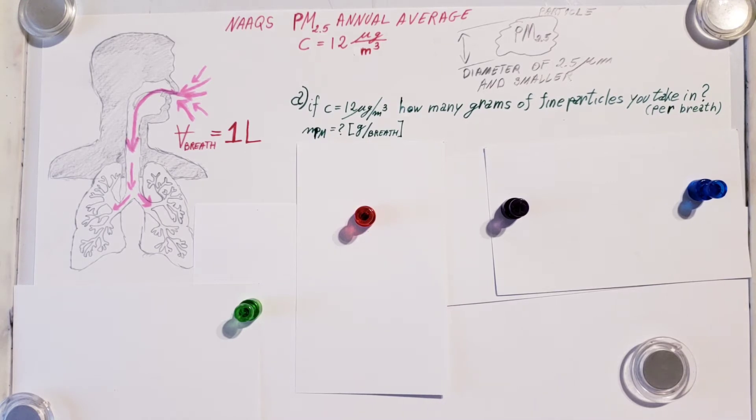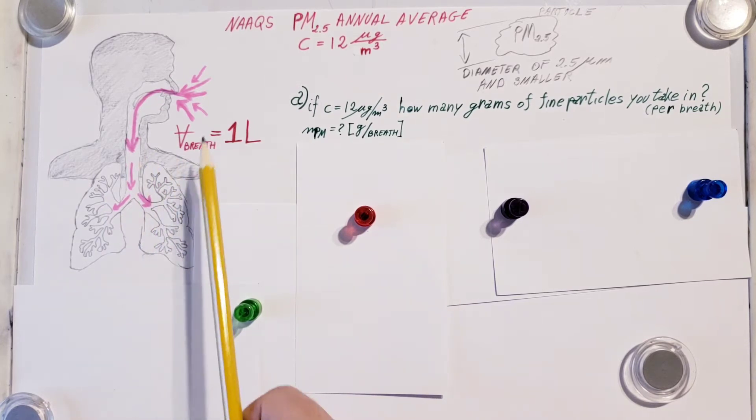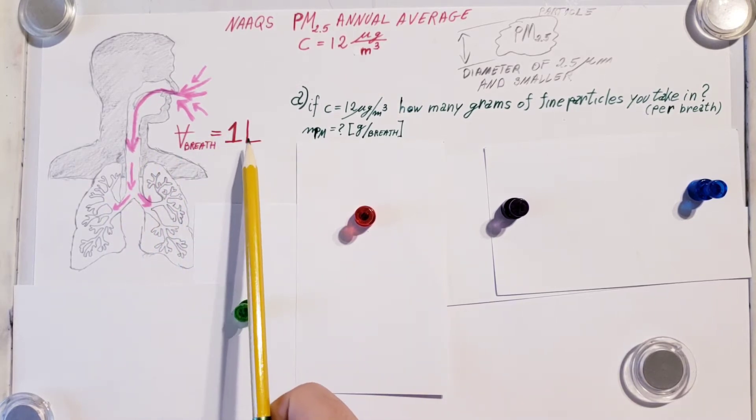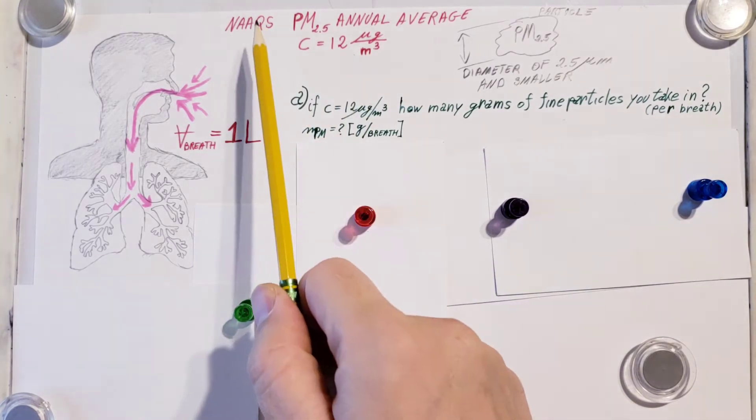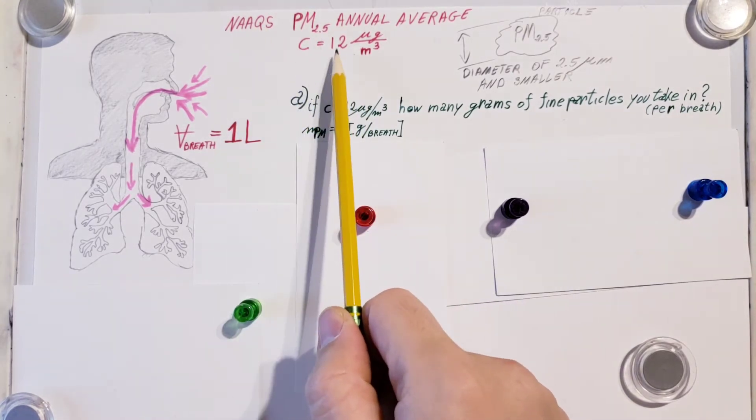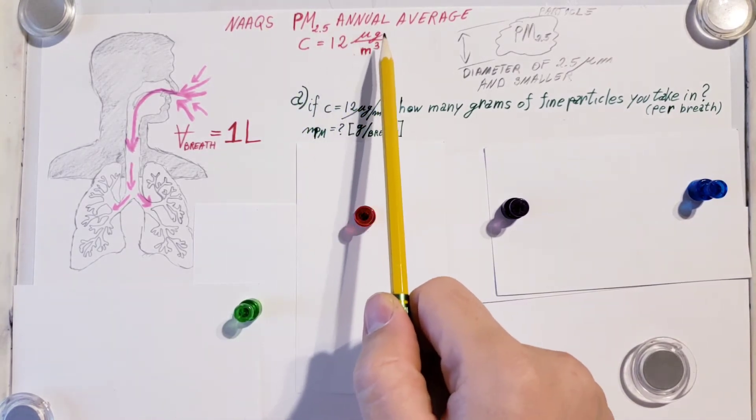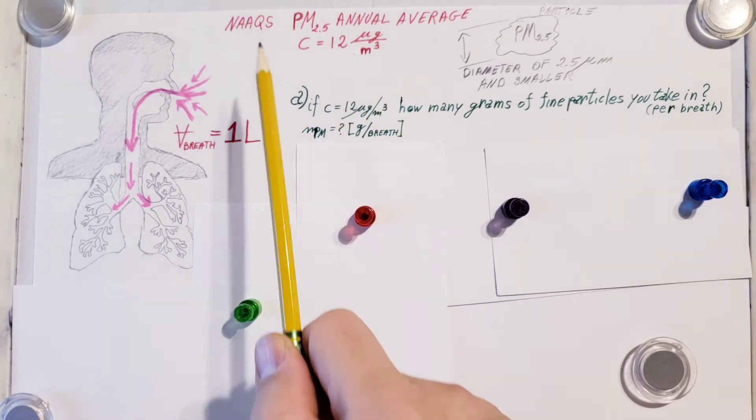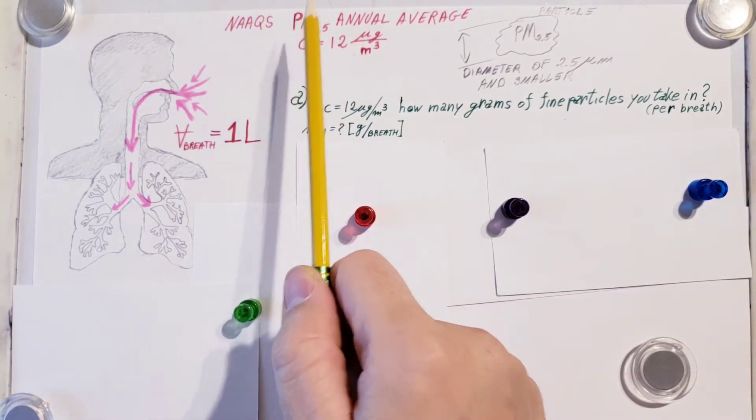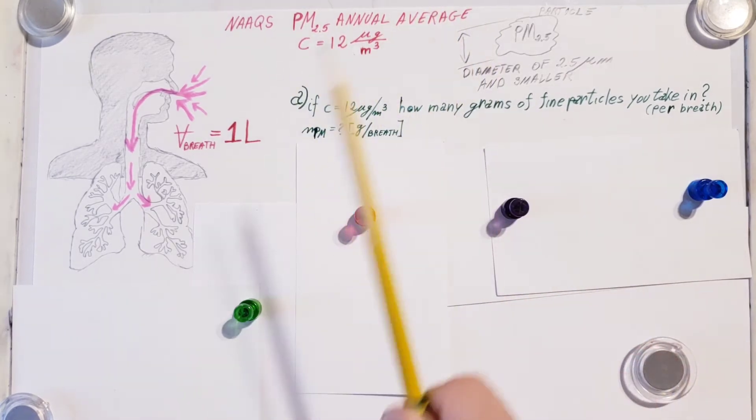We're going to consider our lung to have a volume of one liter. We're also going to consider a concentration of 12 micrograms per meter cubed, and this comes from the NAAQS standard PM 2.5 annual average.